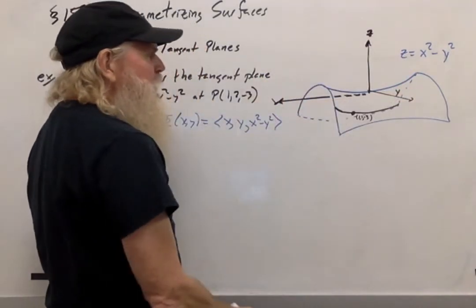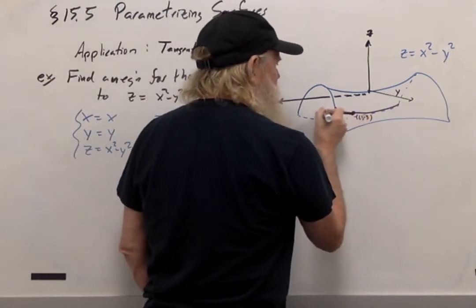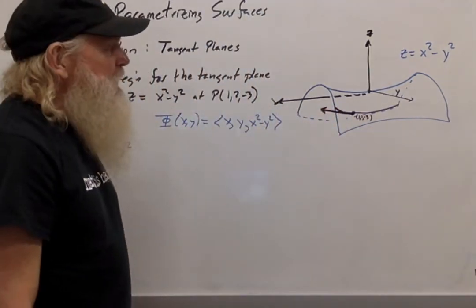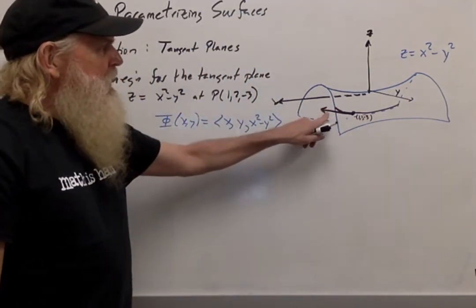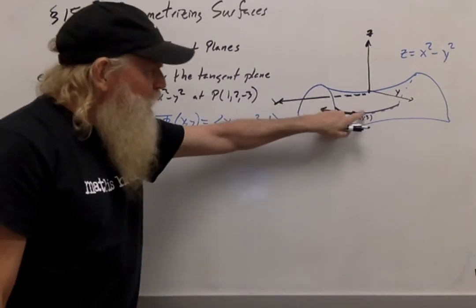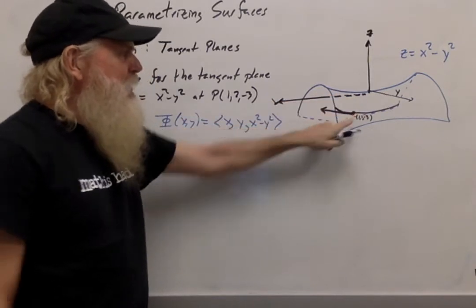So if I take the derivative with respect to x, I'm going to get a tangent vector to that parabola. And since the curve lives in the plane, that means that this vector is going to be tangent. Sorry, since the curve lives in the surface, this vector is going to be tangent to the surface.